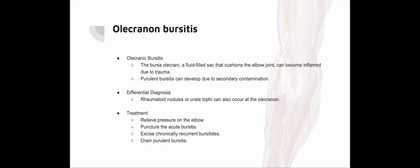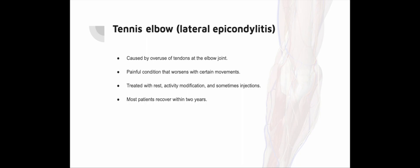Olecranon bursitis: The normally present bursa olecraniii, the cushion behind the elbow, can become inflamed due to one-off or repeated trauma, also called a student's elbow. Purulent bursitis can develop through secondary contamination via a wound or a puncture. Rheumatoid nodules or urate tophi can both occur at the level of the olecranon. Relieving the elbow and possibly puncturing the acute bursitis is the treatment. In chronically recurrent bursitis, excision is appropriate, and in case of purulent bursitis, it must be drained.